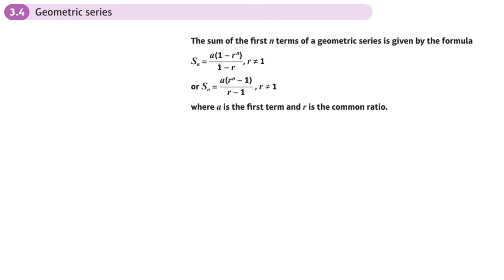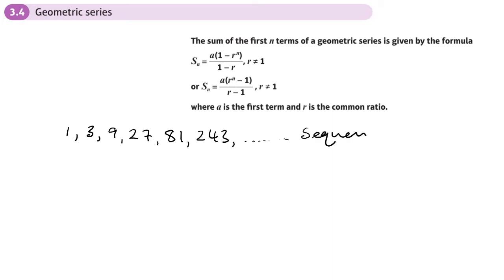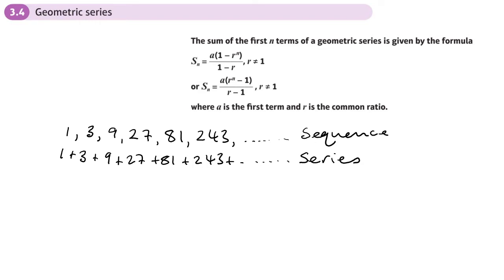This is the fourth section of the sequences and series chapter, and now we move on to geometric series. We've looked at a geometric sequence — for example, where the first term is one and the common ratio is three. A series is when we sum those terms together, even if those terms are negative. Finding the sum of those terms is what we call a series.